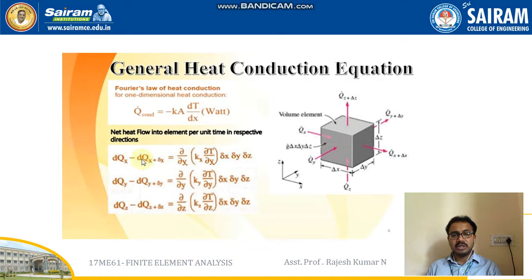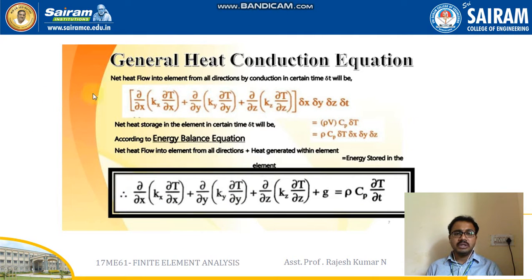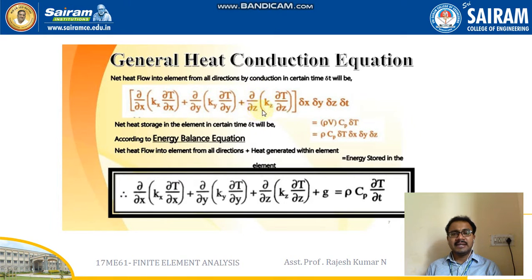We had a discussion on the heat flow into the element per unit time in all three x, y, z directions. The net heat flow into the element from all directions by conduction in time dt will be written as: ∂/∂x(Kx·∂T/∂x) + ∂/∂y(Ky·∂T/∂y) + ∂/∂z(Kz·∂T/∂z), with the volume term Δx·Δy·Δz·Δt common outside.